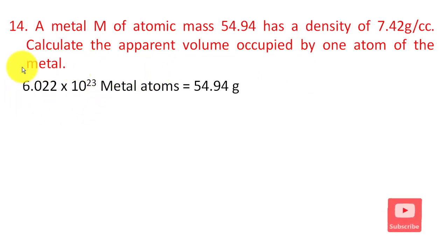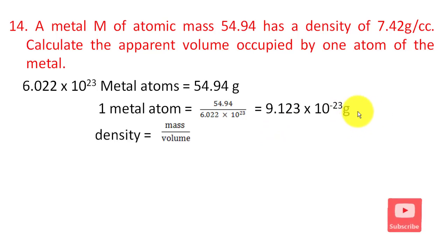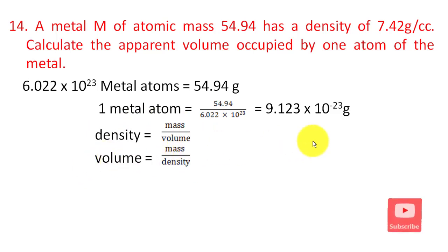Using Avogadro's number 6.022 × 10²³, the gram atom gives the molar mass. The volume of one atom is found using density: volume equals mass divided by density. So mass upon density gives the volume of one atom.